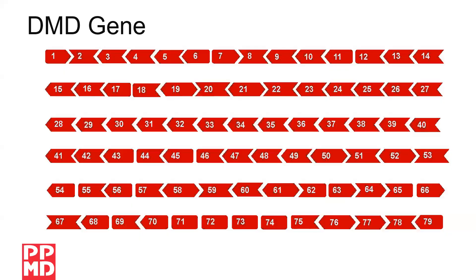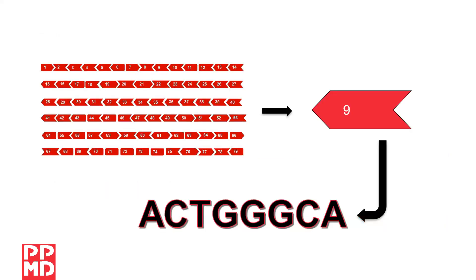So let's start with some quick genetics basics. Every gene is an instruction to make a protein. The gene involved in Duchenne is called DMD and makes the protein dystrophin. All genes are made up of exons, which provide the code for the protein — 79 in this case — and introns. The exons and introns are made up of smaller chemicals called nucleotides, the DNA. Those give the precise instructions for making the dystrophin.